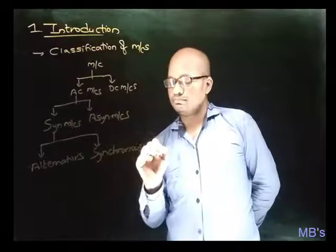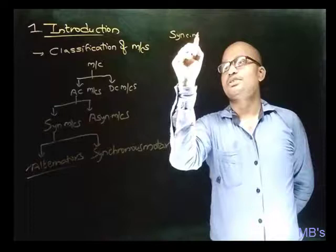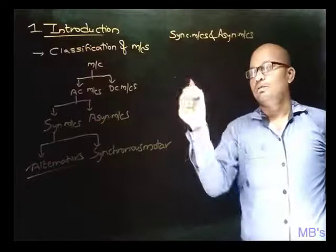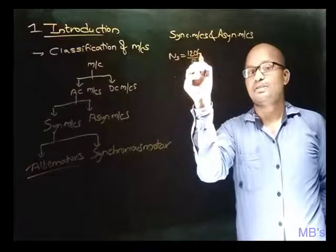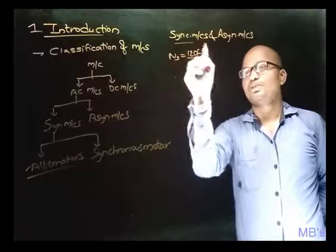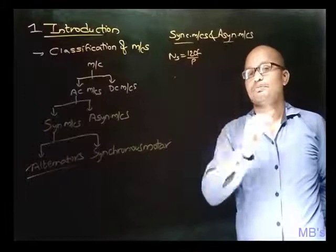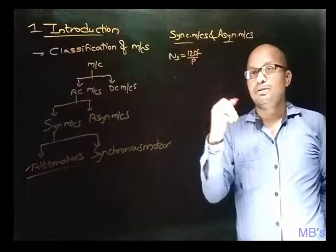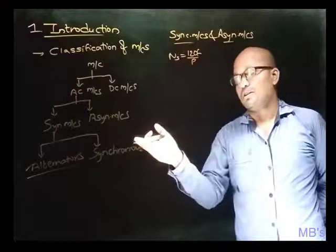Alternators are our focus. The synchronous speed Ns is given by 120f/P, where P is the number of poles and f is frequency. If a machine runs at this speed, it is called a synchronous machine; if it runs at any other speed, it is called an asynchronous machine. Examples of asynchronous machines are induction generators (which run above synchronous speed) and induction motors (which run below synchronous speed), whereas synchronous machines — alternators and synchronous motors — run exactly at synchronous speed.